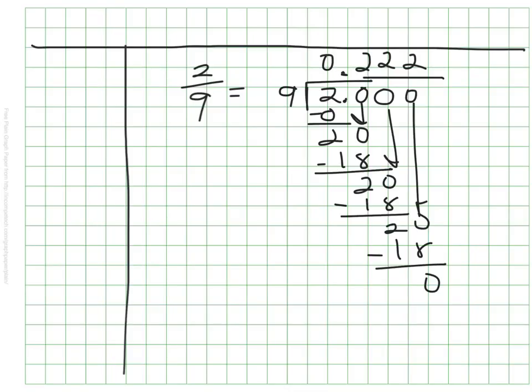How'd you do? Did you notice that 2/9 becomes the decimal 0.2, essentially? But that 2 is going to repeat forever.